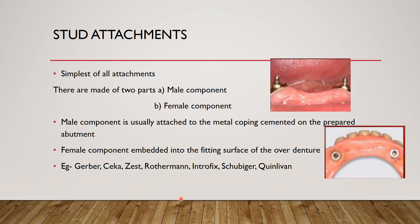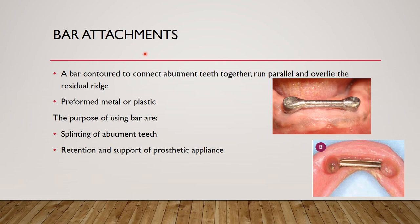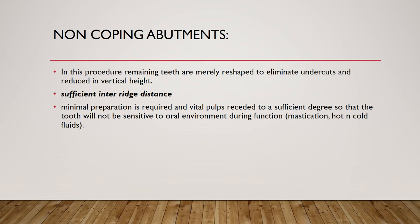The male component is attached to the metal coping, cemented on the prepared abutment tooth. The female component is embedded into the fitting surface of the overdenture. Examples include the Zest Anchor, Schrotermann, and Gerber systems. Bar attachment requires very good interarch space which patients often lack, so stud attachment is more commonly used.